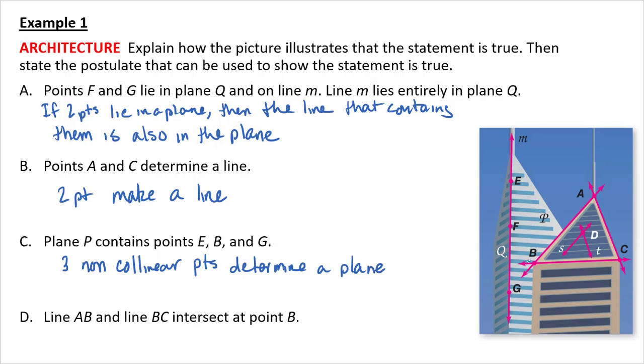If you look at this in terms of a building, it looks like points B is in a different building as points E and G. But I can justify this that E, B, and G are all in the same plane because three non-collinear points determine a plane.